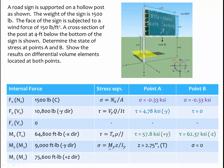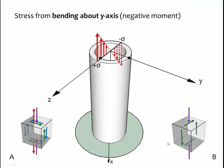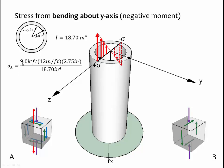Going to our table, the stress equation is sigma equals M times the distance from the neutral axis along the z-axis, divided by the moment of inertia. The z-value for point A is the inner radius, 2.75 inches. Normal stress at point B is zero. The moment of inertia is 18.70 inches to the fourth; because it's a pipe, it is the same regardless of axis. Stress at A equals the moment 9 kip-feet times 12 inches per foot, times 2.75 inches, divided by 18.70 inches to the fourth, giving 15.88 ksi in tension.